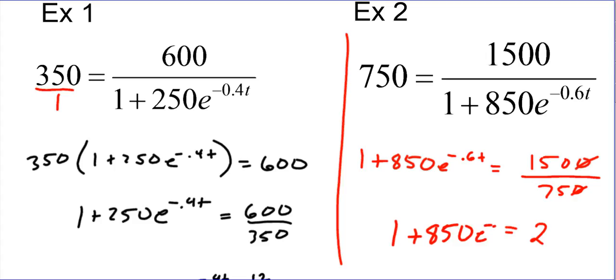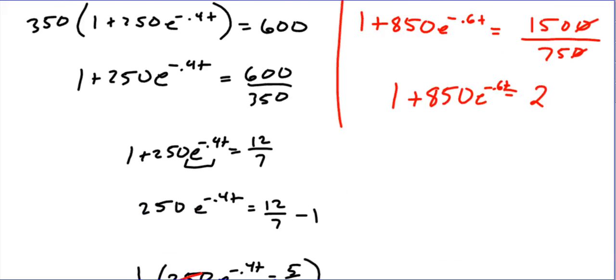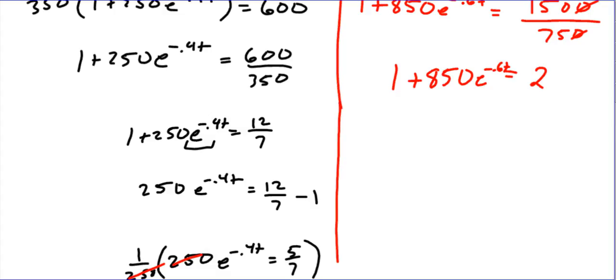From here we're going to continue on. We're going to subtract 1, so we have 850 e to the negative 0.6t. Subtract 1, it's going to give us 1. We're now going to divide by 850, so we have e to the negative 0.6t equals 1 over 850.